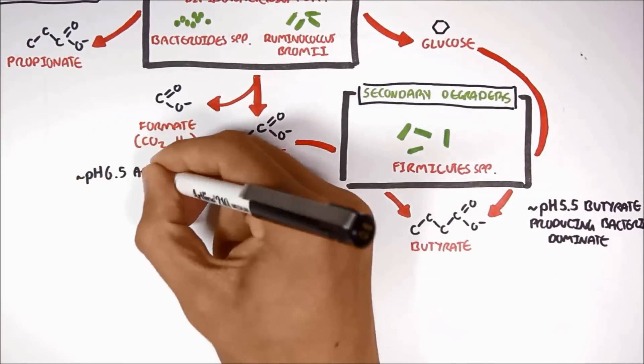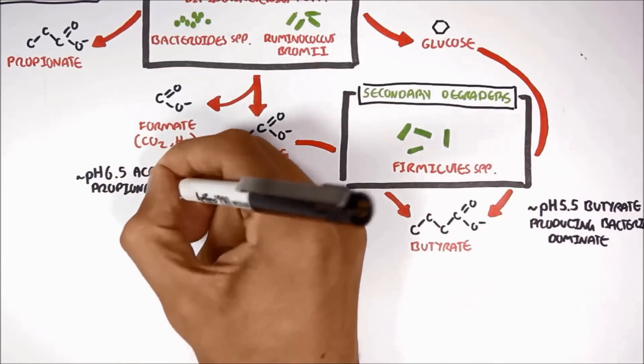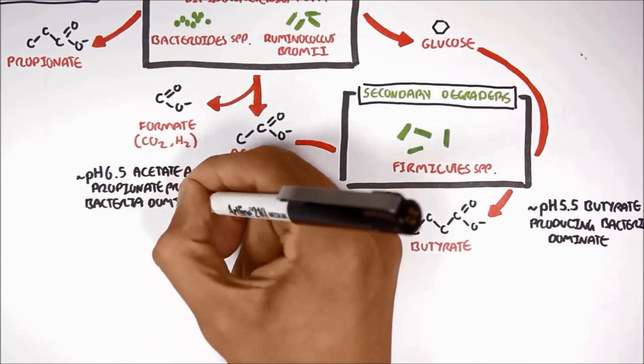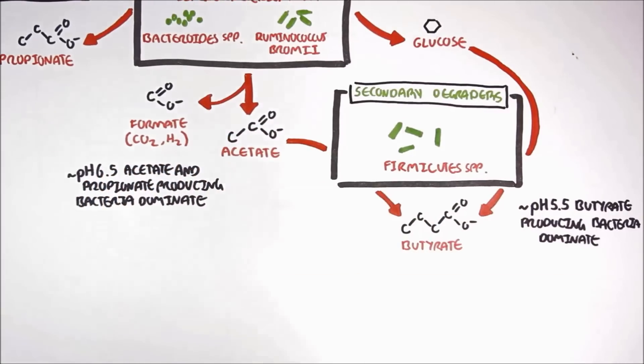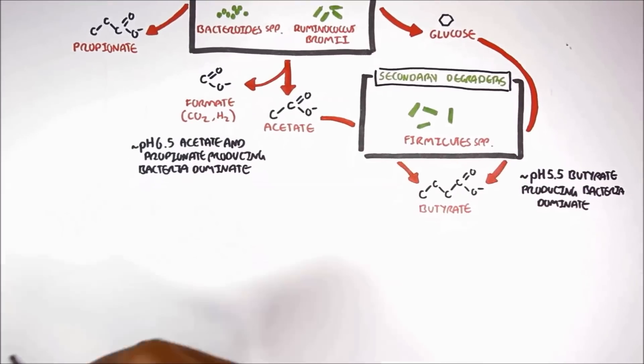However, at a slightly higher pH, about 6.5, acetate and propionate-producing bacteria dominate, and butyrate-producing bacteria seem to be less prominent.